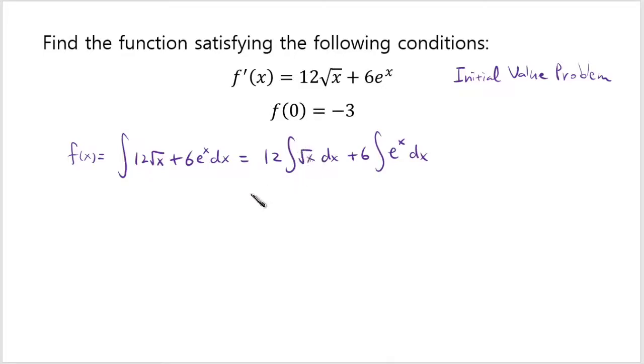And then since square root of x can be written as 1 half power, and by the way the integral of e to the x is e to the x, so it's just simply 6 e to the x. And usually you put plus c for integrals, but because this integral will also produce a c we will not put the plus c now. You just have to put plus c just once.